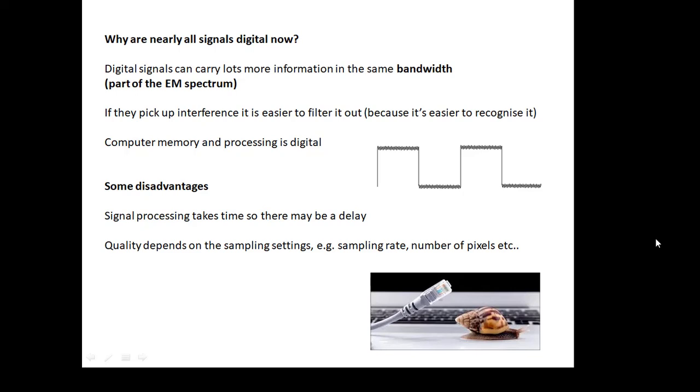Why are nearly all signals digital now? Because there's lots of advantages of digital signals. They can carry lots more information in the same bandwidth. If they pick up interference, it's easier to filter it out because it's easier to recognize it. If you look at this digital signal here, it's picked up a little bit of interference, but it'll be very straightforward just to filter that out. Computer memory and processing is all digital. Computers are digital, and they can deal with digital signals very easily.